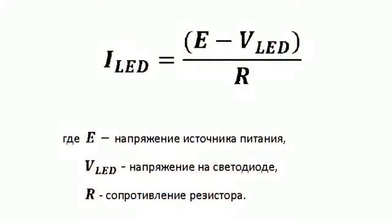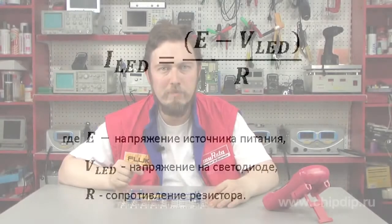Consequently, the current passing through the bulb and the LED is the ratio between the difference of the applied voltage — the power supply and the LED — and the resistance value. If the battery voltage is 3V, the current will not exceed 13mA.